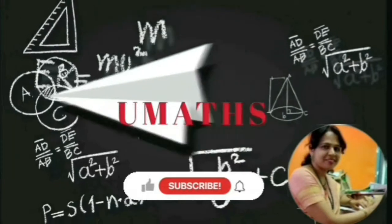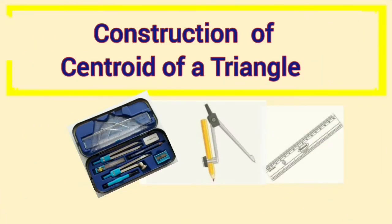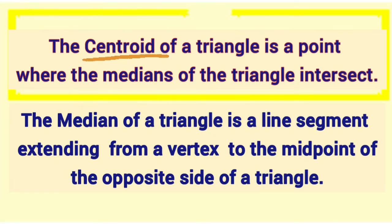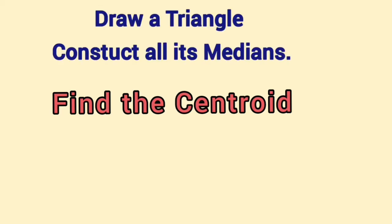Hello students, welcome to uMatch class. I hope you all are eager to learn a new concept with me. This video demonstrates how to construct the centroid of a triangle using compass and ruler. The centroid of a triangle is the point where the medians of a triangle intersect. The median of a triangle is a line segment extending from a vertex to the midpoint of the opposite side. To find the centroid, let us construct the medians.